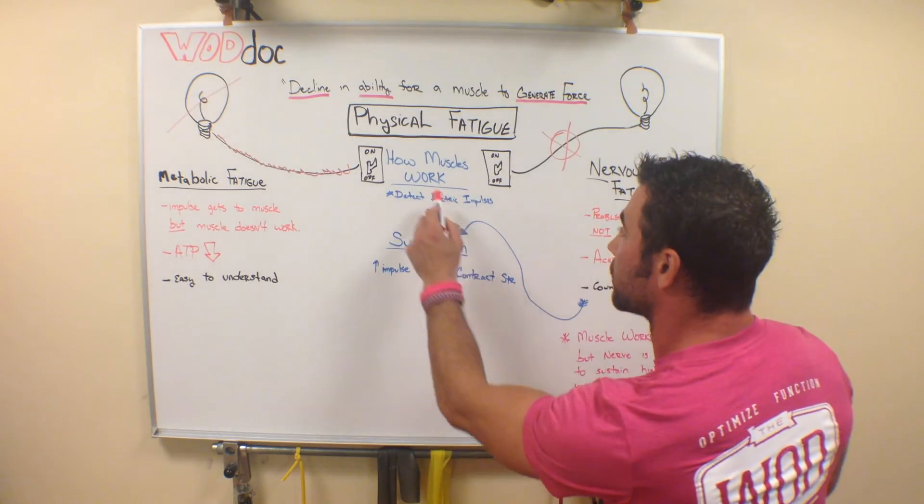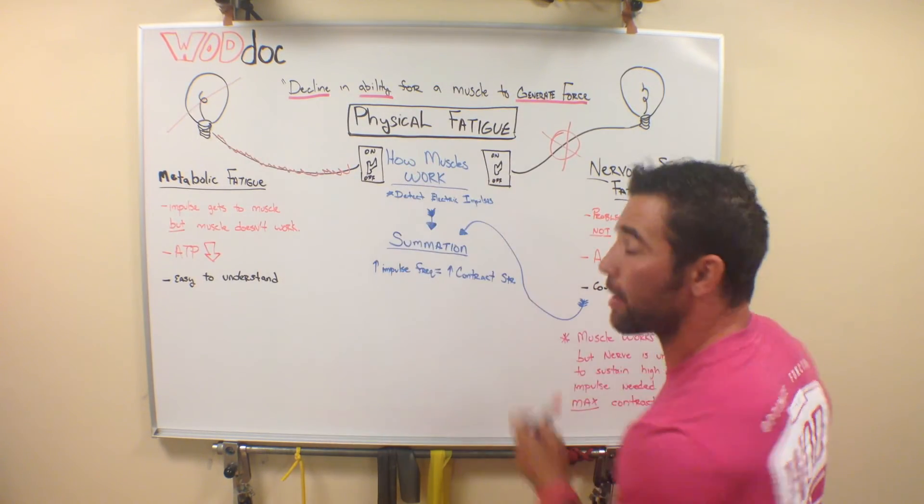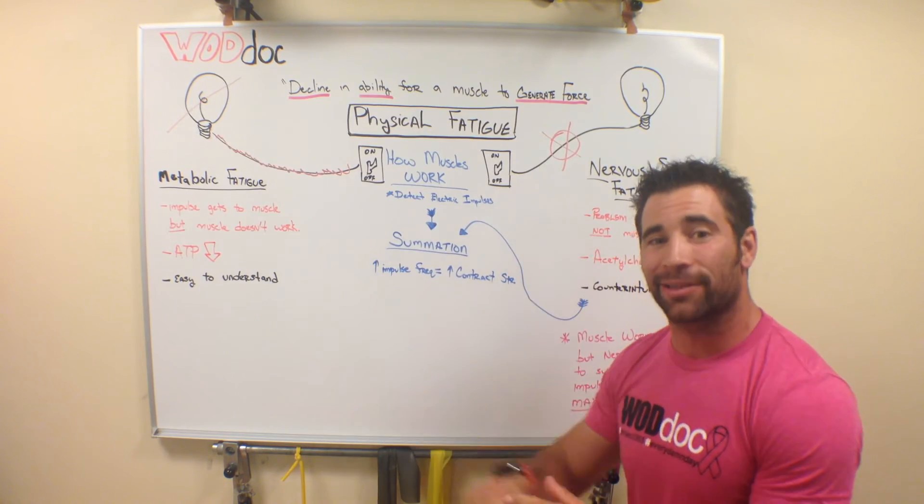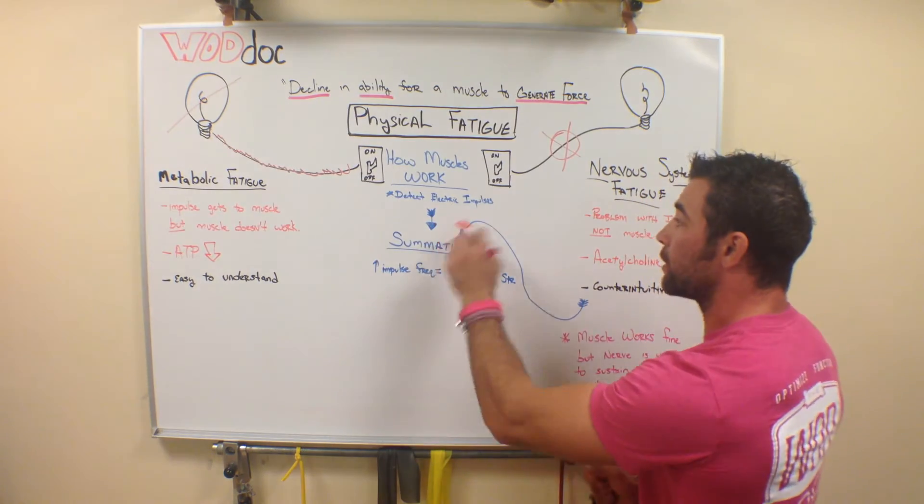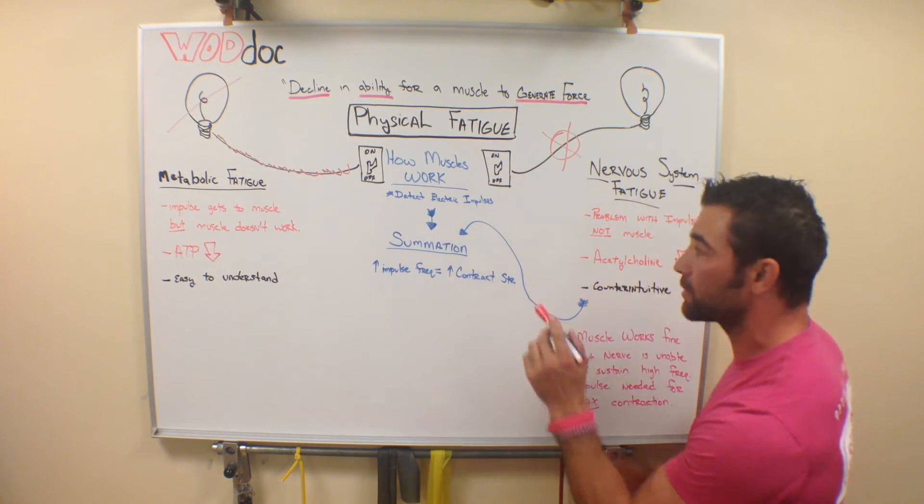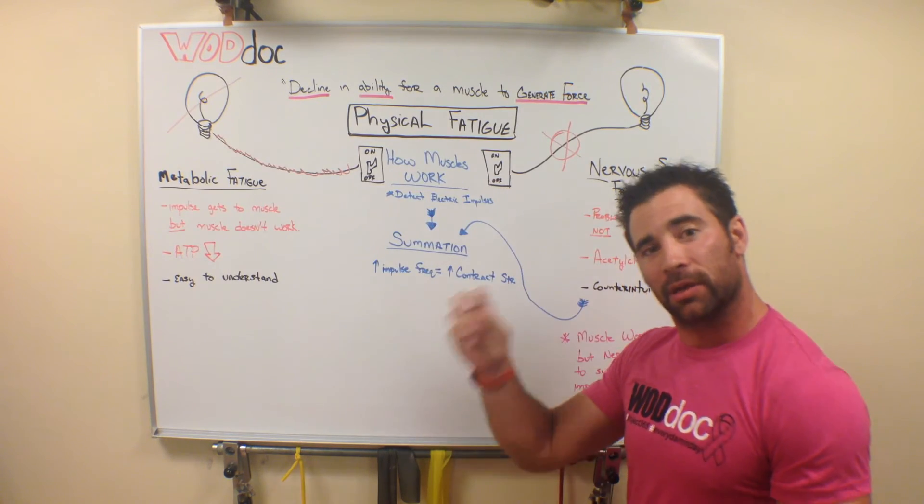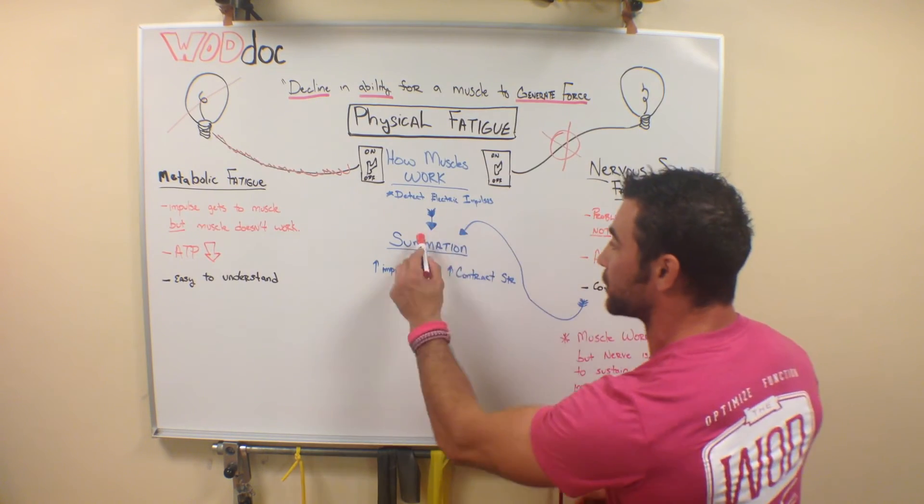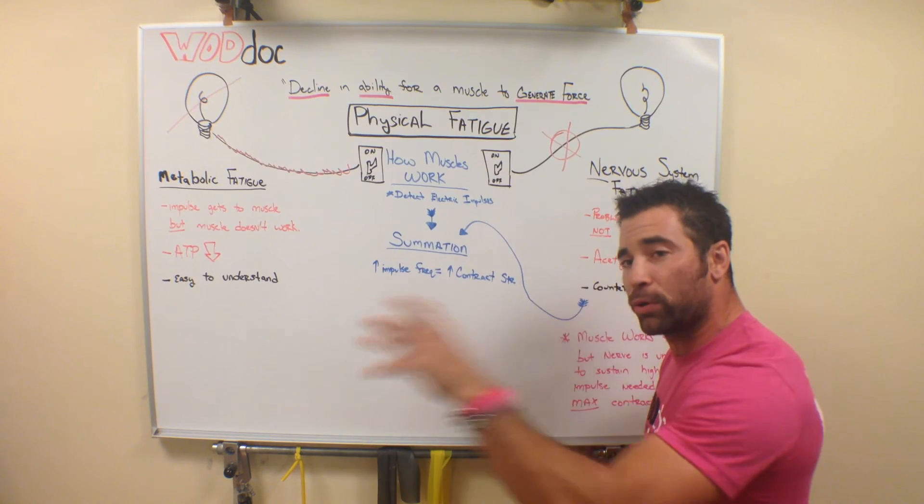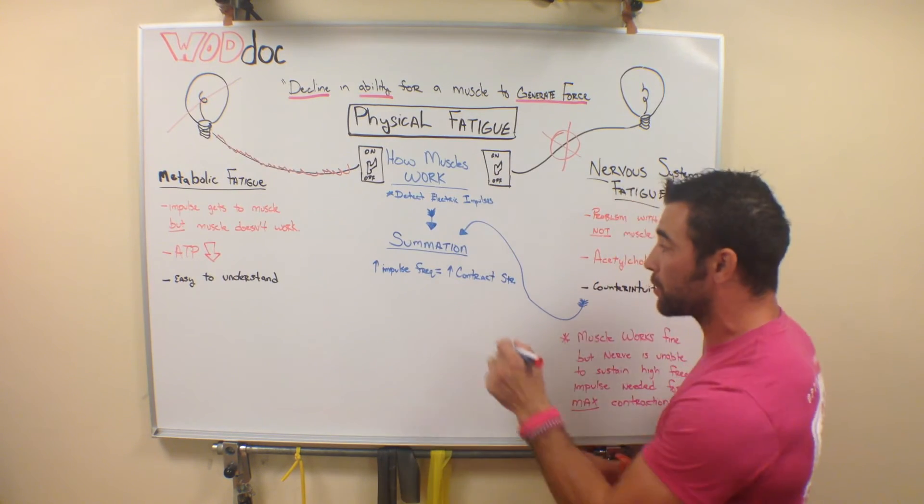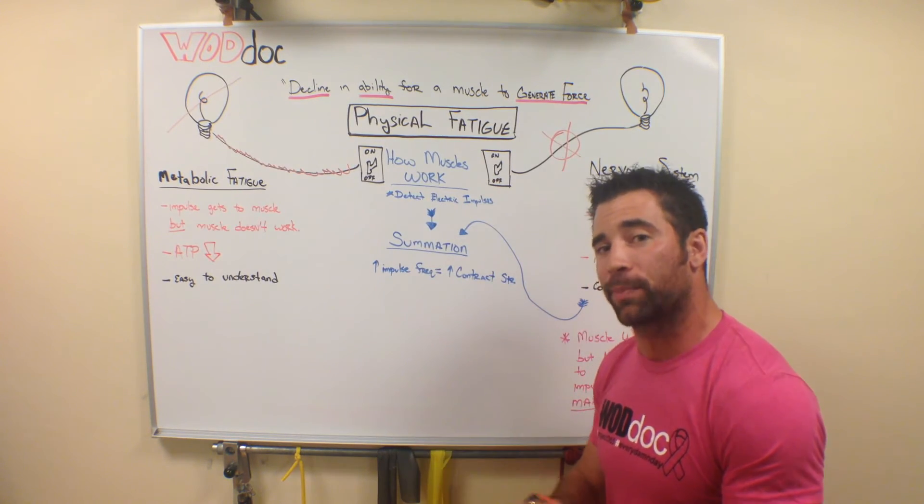But to understand why that happens, we need to understand a little bit more about muscles and how they work. We just said that muscles detect electrical impulses, and that's how they turn on. But it doesn't work just that simply. It's not like light switch on, light switch off. It's actually a summation effect. That means that the impulse frequency at which those muscles receive that signal is important.